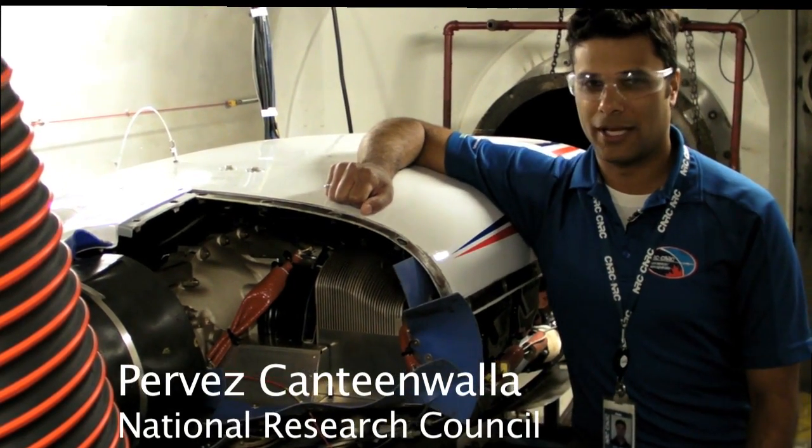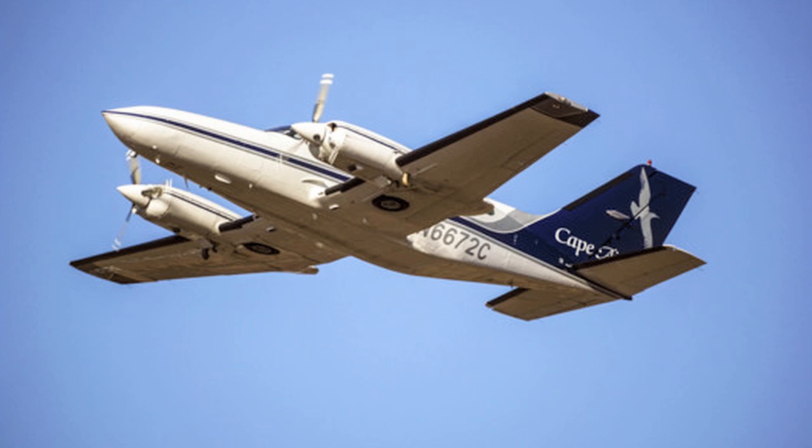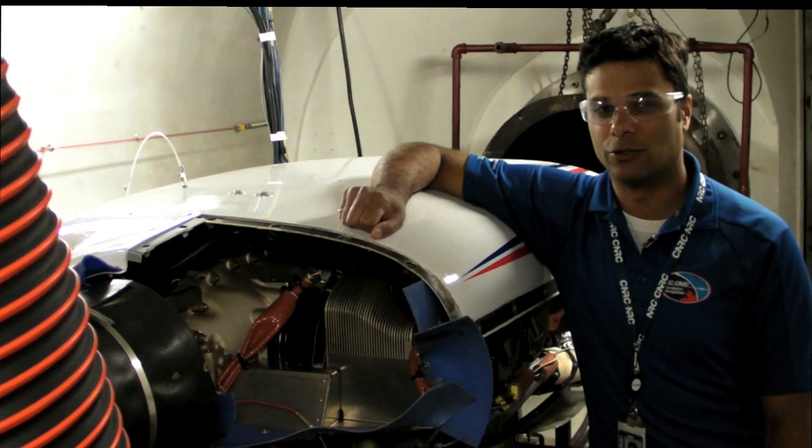Here's Purvez Cantinwala to tell us how it all works. So this is a Continental TSIO 520 VB engine. It's the same sort of engine that's found in the twin-engine Cessna 402C aircraft. And here we're at the National Research Council of Canada's altitude chamber facility.